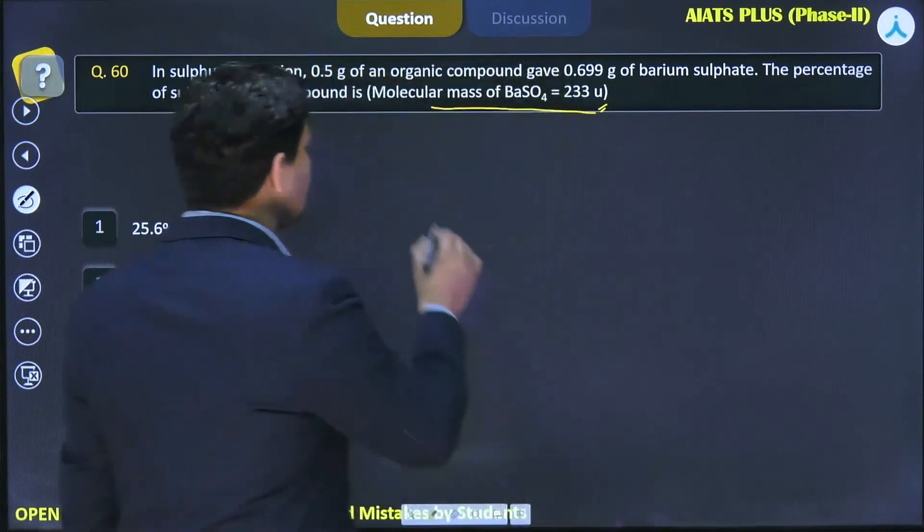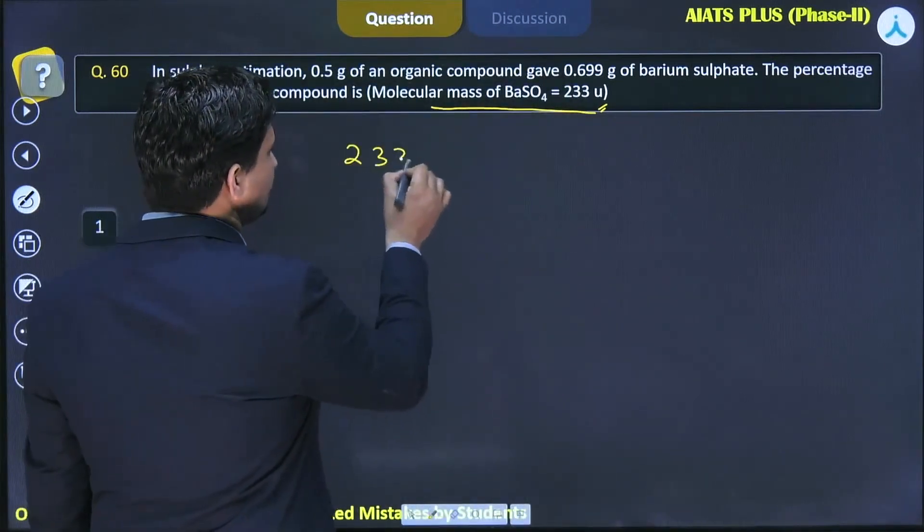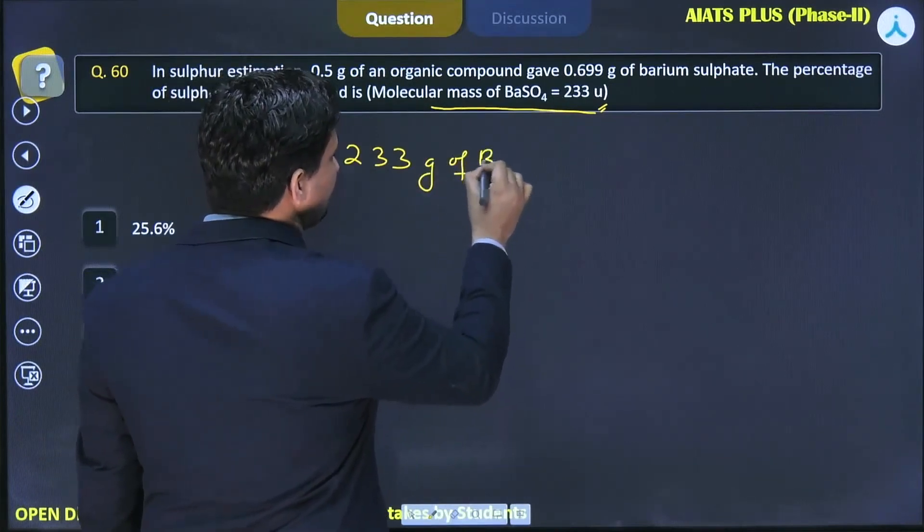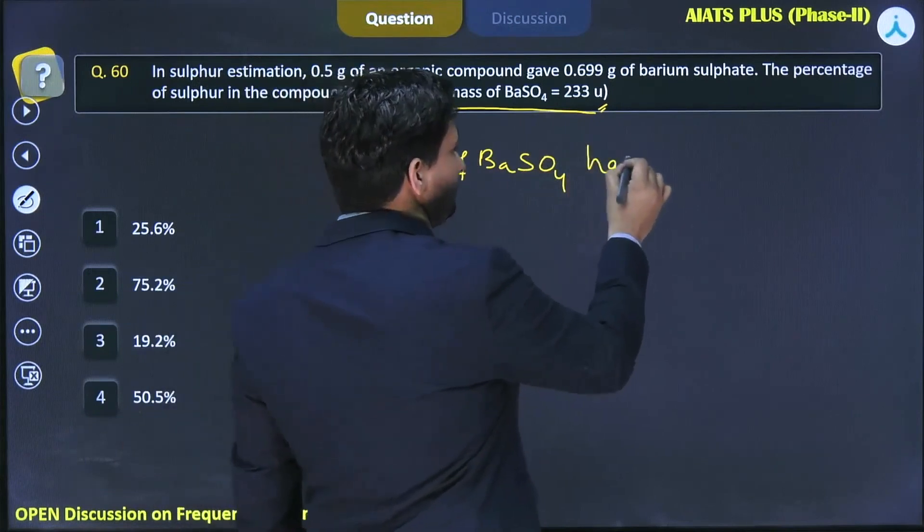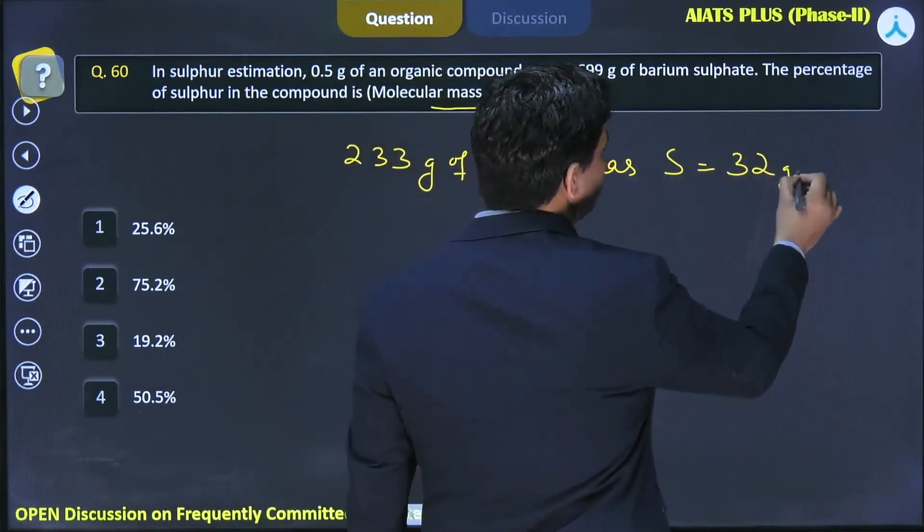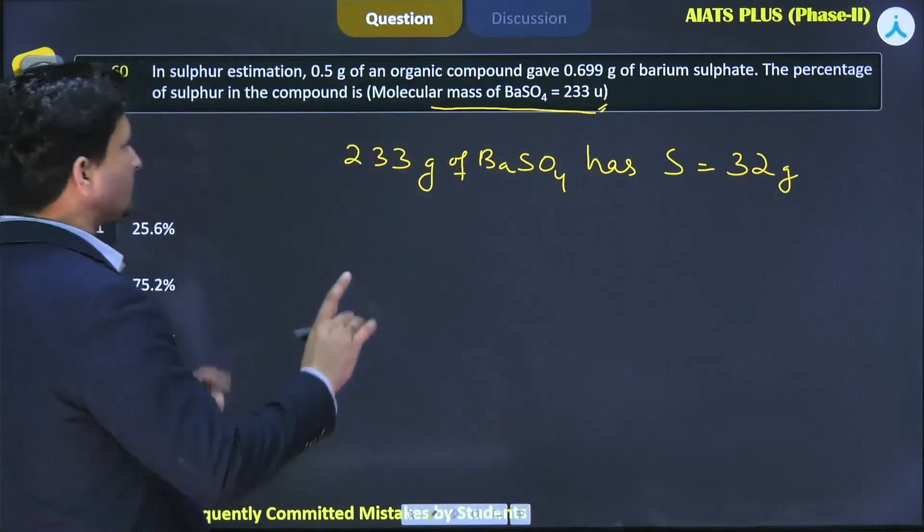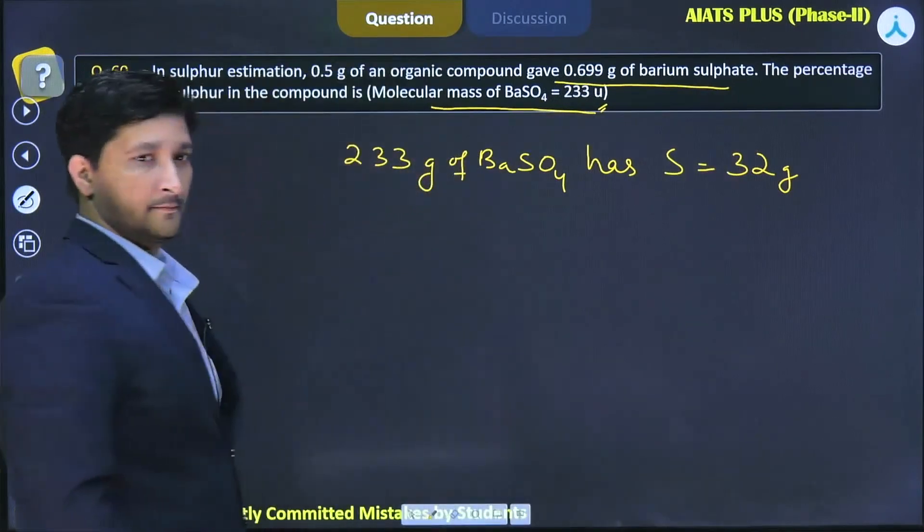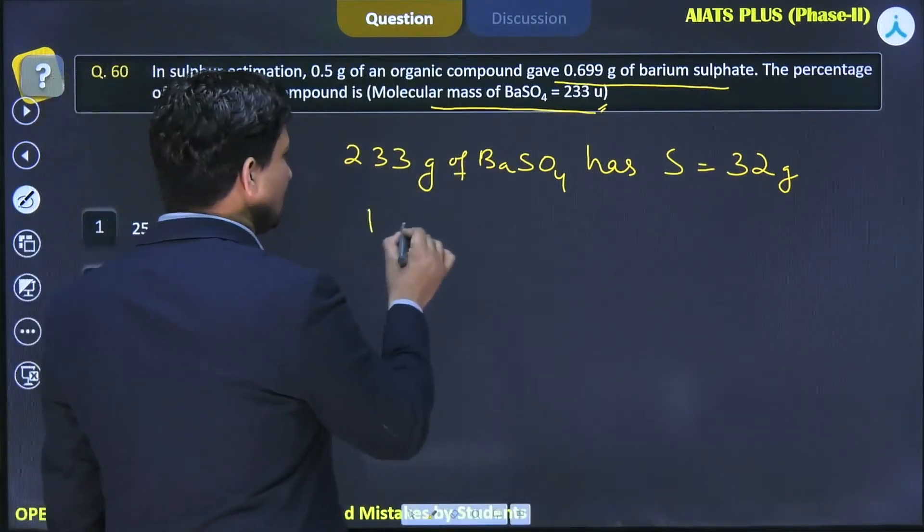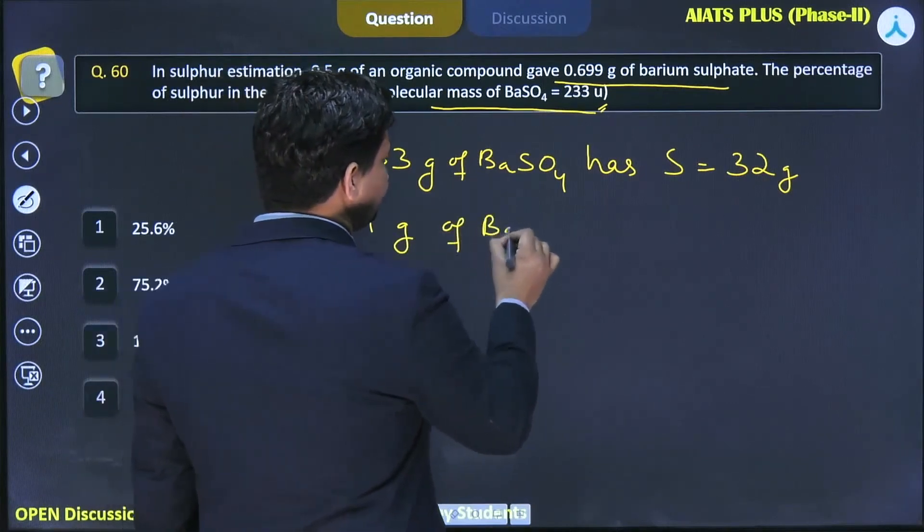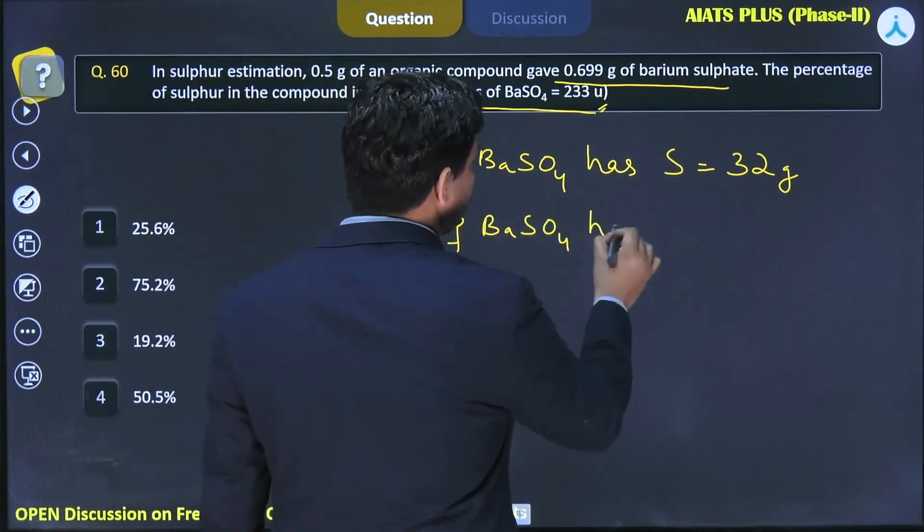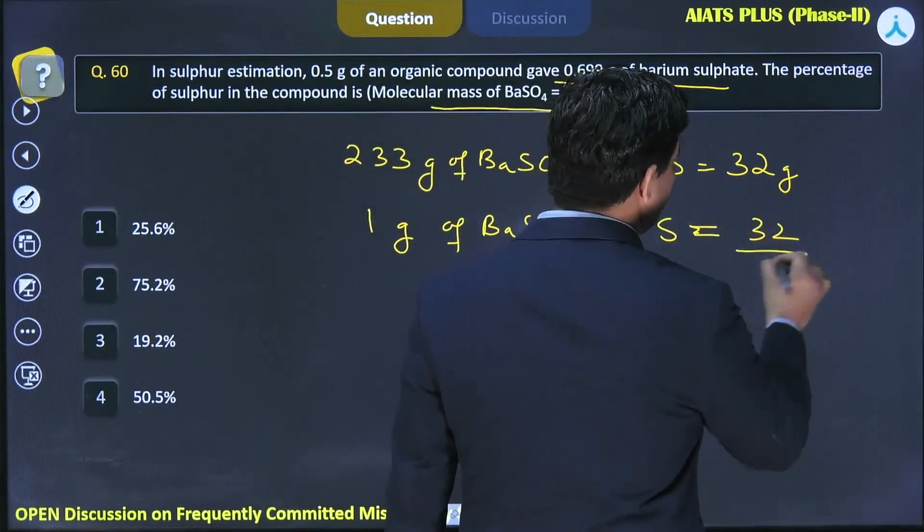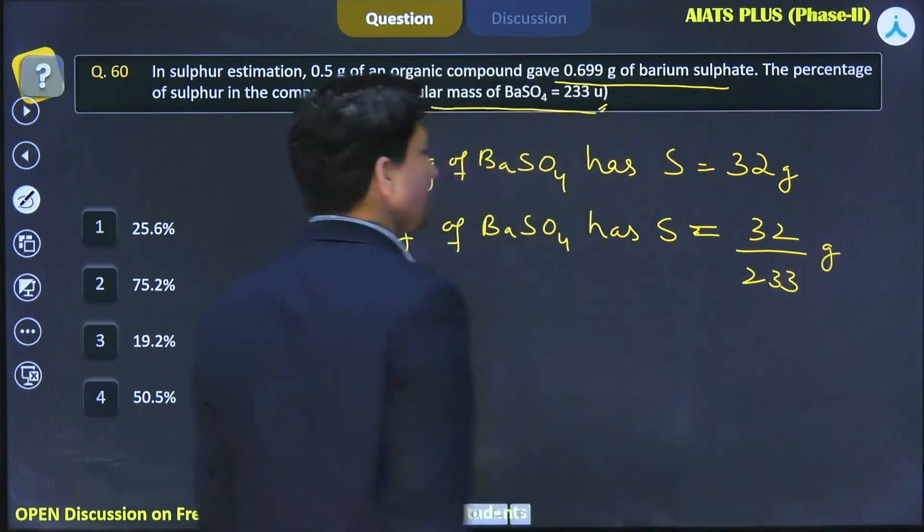So we can say that 233 grams of barium sulfate has sulfur equal to 32 grams. In this question, they have given us how much barium sulfate we obtained. Using unitary method, 1 gram of barium sulfate has sulfur equal to 32 by 233 grams.